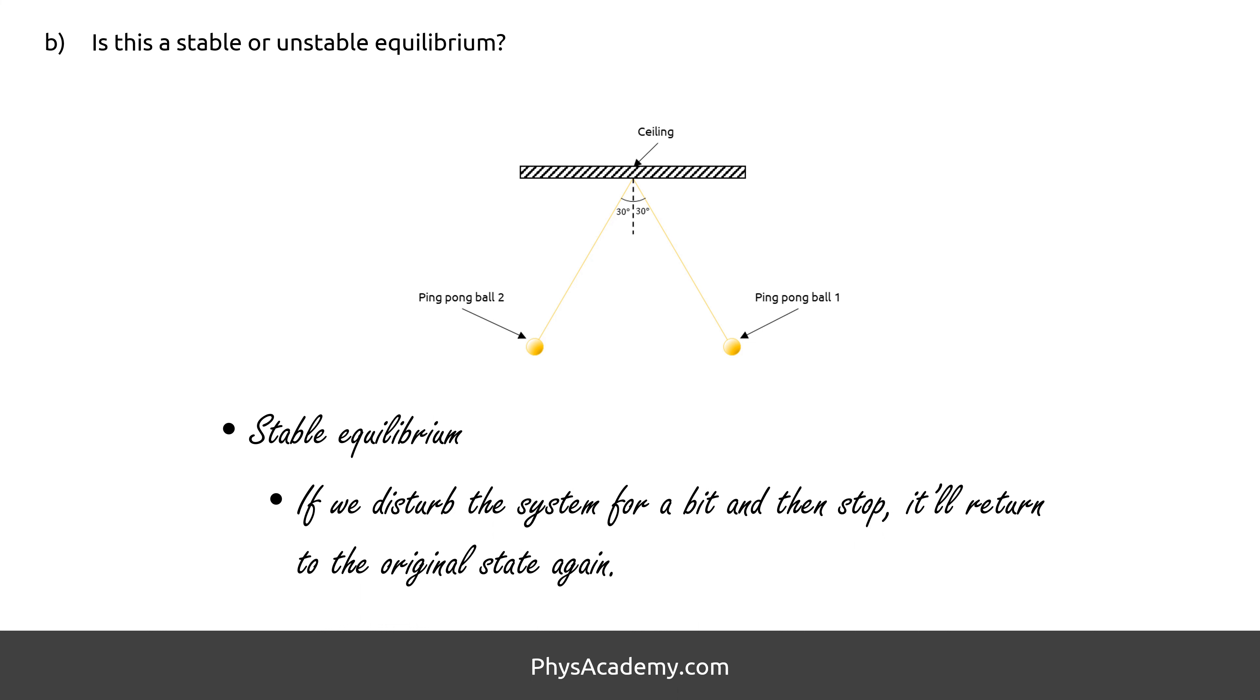But if, after disturbing the system, it doesn't return to the original condition and prefers some other energy state, for example pushing a ball on the top of a hill, it is an unstable equilibrium point.